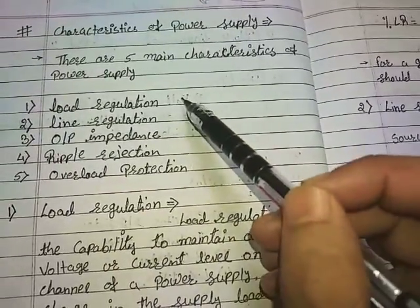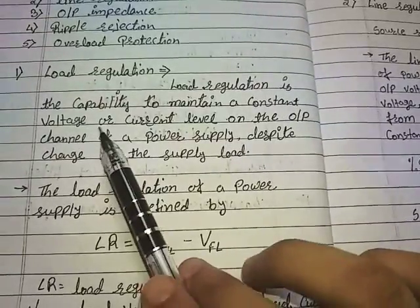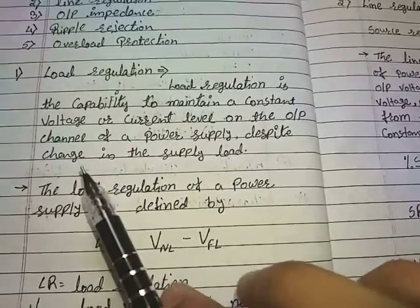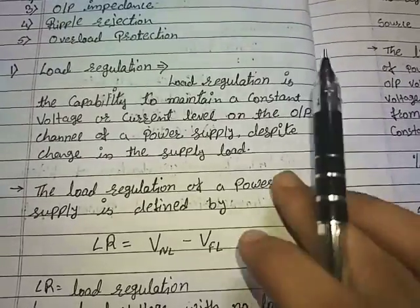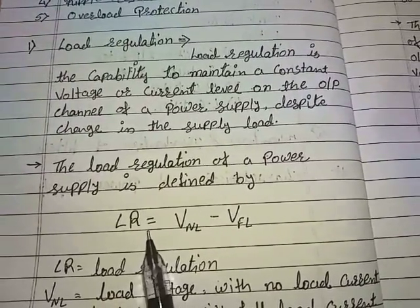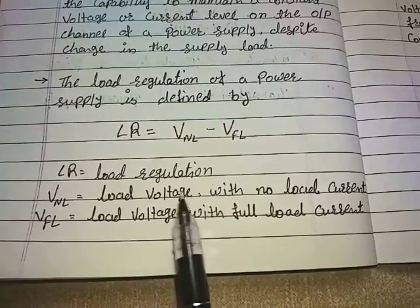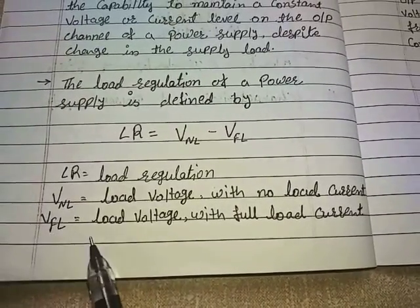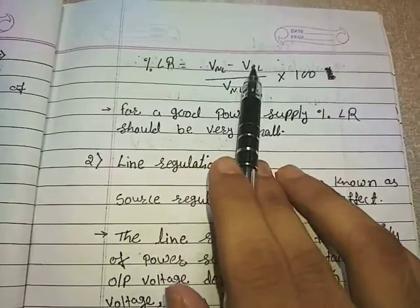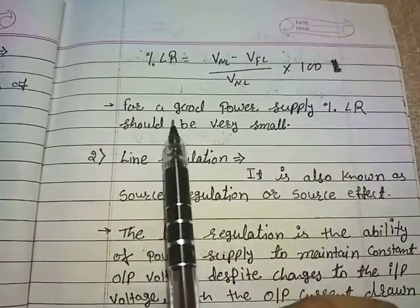Let's start with load regulation. Load regulation is the capability to maintain a constant voltage or current level on the output channel of a power supply despite changes in the load. Load regulation is defined by LR, where LR = VNL − VFL. VNL is the load voltage with no load current and VFL is the load voltage with full load current. The percentage LR is given by (VNL − VFL) / VNL × 100. For a good power supply, percentage LR should be very small.